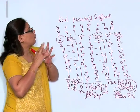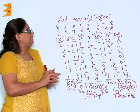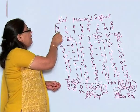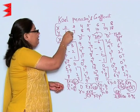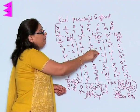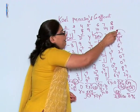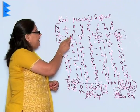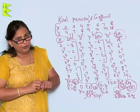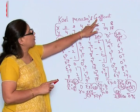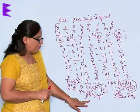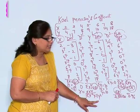In Karl Pearson's coefficient of correlation, we take X and Y as different identities, write down their observations, take out the deviation and the deviation squared for each, then find the multiple deviation — deviation X multiplied by deviation Y. The formula to remember is: correlation equals sigma XY upon the square root of sigma X squared into sigma Y squared.